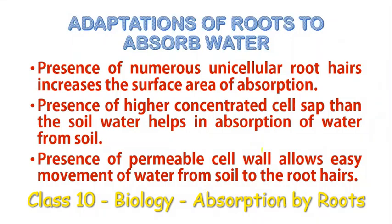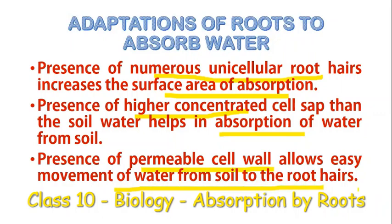Roots are adapted to absorb water in several ways. First, the presence of numerous unicellular root hairs increases the surface area of absorption. Secondly, the higher concentration of the cell sap helps in the absorption of water. Thirdly, the cell wall being permeable allows easy movement of water from the soil into the root hairs.